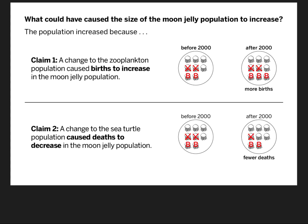You're going to be using it in a similar way that we did in Chapter 1 — I believe it was Chapter 1, Lesson 1.4. We ended up with our chapter question: what could have caused the size of the moon jelly population to increase? By the end of Chapter 1, we had two possible claims. Claim 1: a change to the zooplankton population caused births to increase in the moon jelly population.